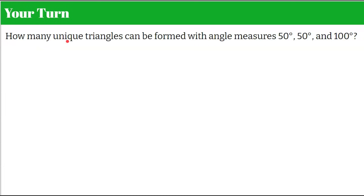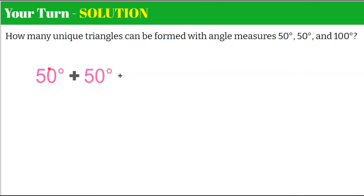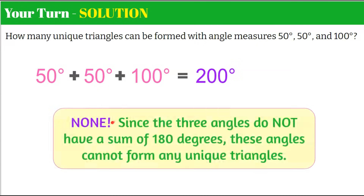Now it's your turn. How many unique triangles can be formed with the angle measures 50 degrees, 50 degrees, and 100 degrees? Don't forget your triangle sum theorem. Let's add these three angles together: 50 plus 50 is 100, add another 100 and we get 200 degrees. They're trying to trick you. Since the three angles do not have a sum of 180 degrees, these angles cannot form any unique triangles — the answer is none.